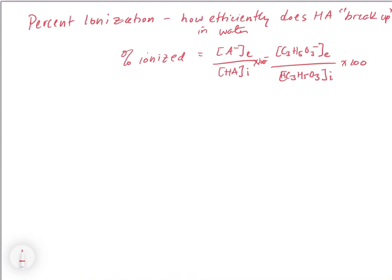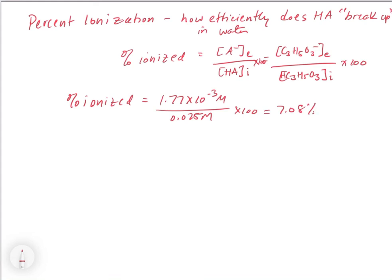So in this case, our percent ionized equals the concentration of C3H5O3- at equilibrium, which is 1.77 × 10⁻³ molar, divided by 0.025 molar (the initial concentration of lactic acid), times 100. We get a percent ionized of 7.08 percent. These percent ionizations are not very large for weak acids — they don't break up completely in water, and most of the time they don't even break up past 10 percent. In this case the acid is quite weak: only about 7 percent breaks up, leaving 93 percent as HA in solution.